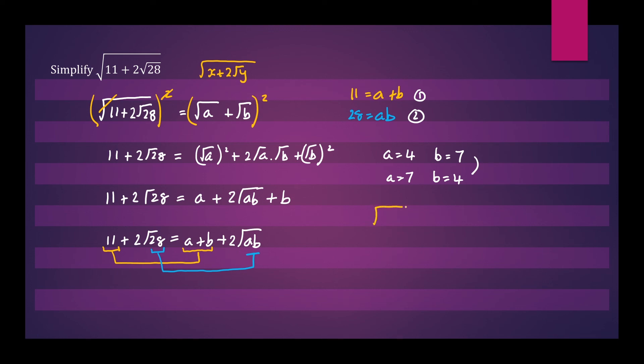So finally, we can write that root 11 plus 2 root 28 is equal to root 4 plus root 7. And of course, we can simplify that to be 2 plus root 7. And this is your simplified answer. Thanks for watching.